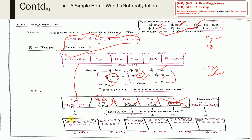Converting to binary: opcode 0 → 6 bits of zeros. rs = 17 → 16+1 → 10001. rt = 18 → 16+2 → 10010. rd = 8 → 01000. sa: not applicable → all zeros. Function = 32 → 100000. This gives us the complete 32-bit binary machine language representation of 'add $t0, $s1, $s2'.